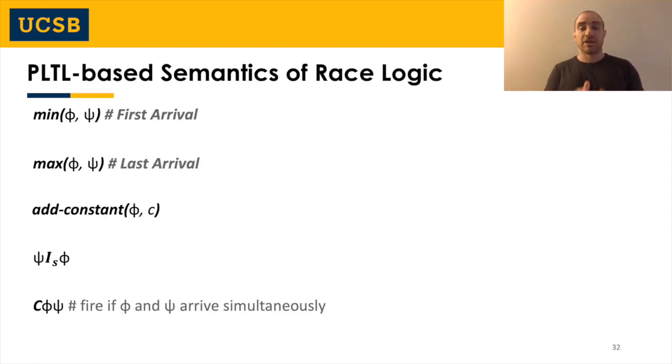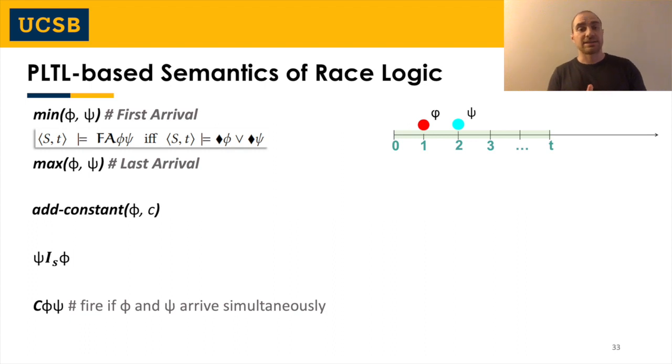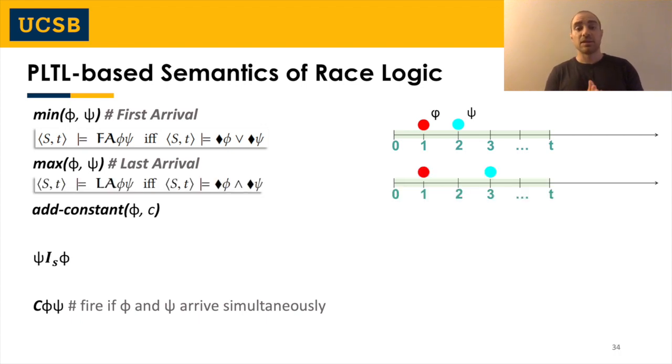Now let's revisit race logic's primitives. As we already discussed under this representation, min function is equivalent to first arrival. The first arrival property holds for formulas phi and psi at time step T in a system S if and only if either phi or psi hold at time step T or prior. Last arrival, which corresponds to the max function, holds at time step T if and only if both phi and psi hold independently, within the given scope. And similarly, we can proceed with the specification of the functionality of the remaining operators.